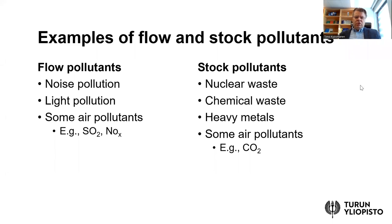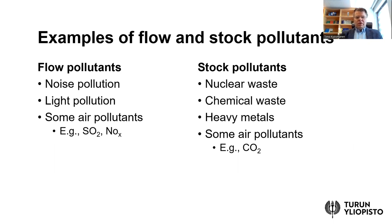Let's take a few examples. Think about noise pollution or light pollution — these are prime examples of flow pollutants. If you turn off the light or turn off the source of the noise, the damage will stop immediately. There are also some air pollutants with very short lifetimes, such as sulfur dioxide, which can be meaningfully modeled as flow pollutants.